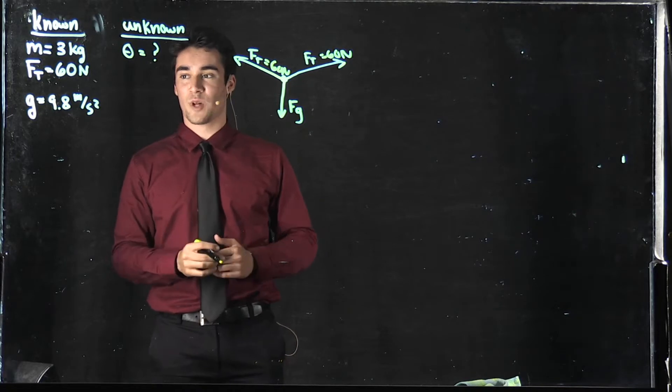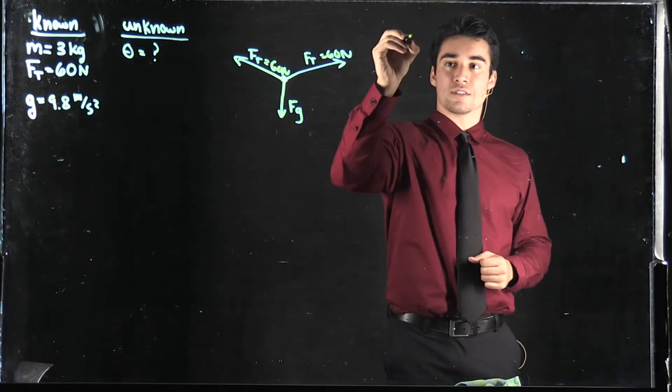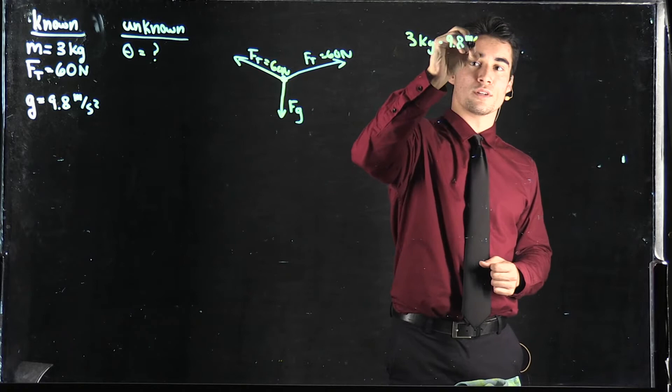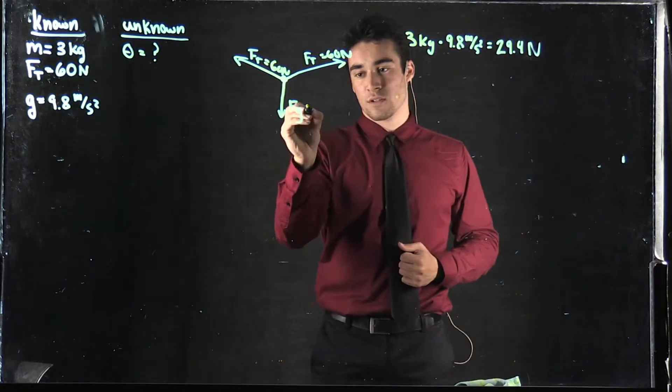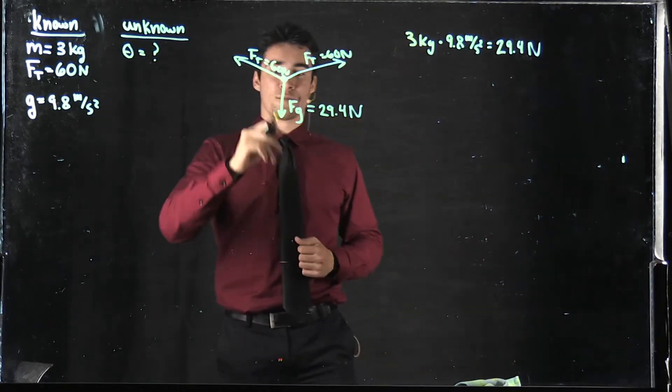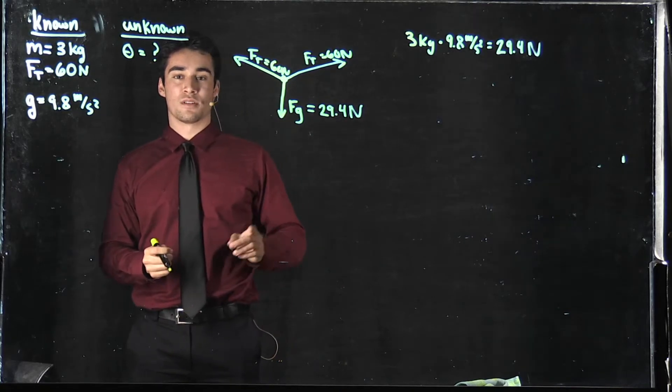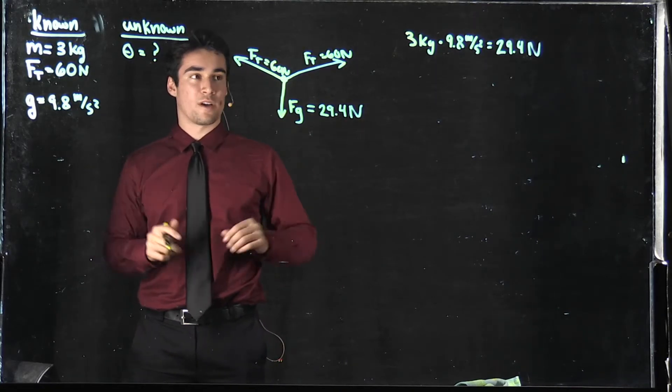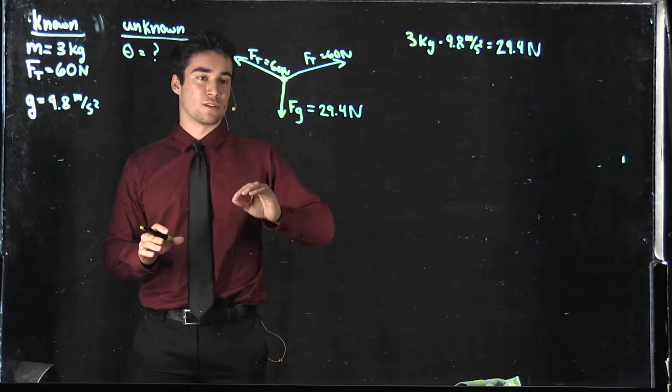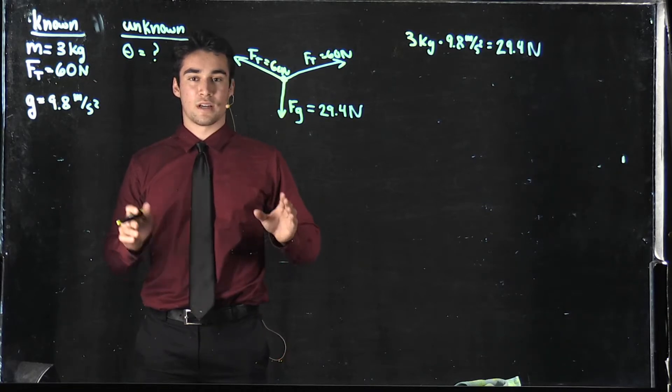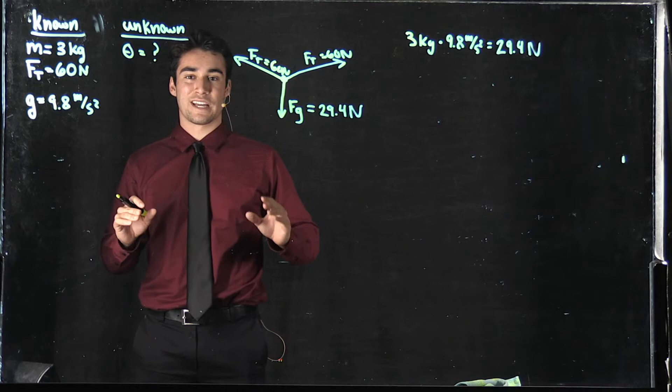In order to find the weight we just have to multiply by the acceleration of gravity. Now both of these tension forces are at an angle which means that they have an x component and a y component. Because this object is in equilibrium, there's no acceleration, we have to find how to cancel the forces in the x and y direction.